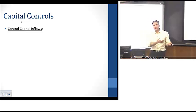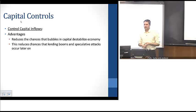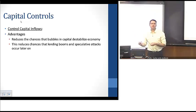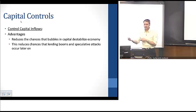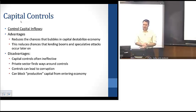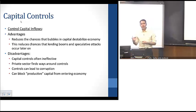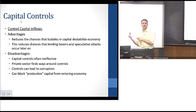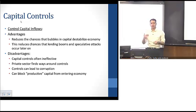The flip side is that we can control the inflow of capital. For a lot of the same reasons, it has the same advantages and disadvantages. If we control the amount of capital coming into the country, that can later mitigate the potential for asset price bubbles, lending booms, and speculative attacks. The disadvantages are again the same: controls are often ineffective, the private sector finds ways around them, it can lead to corruption, and it can also block productive capital from entering the economy. Capital controls often don't discriminate between speculative capital — which will run at the first sight of trouble — versus productive capital that can actually be beneficial.